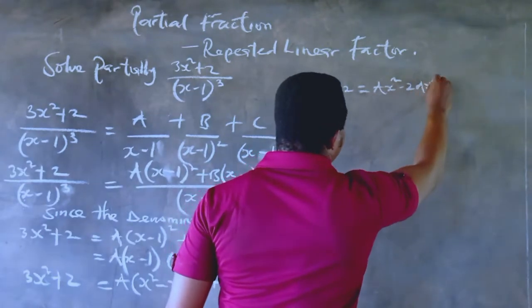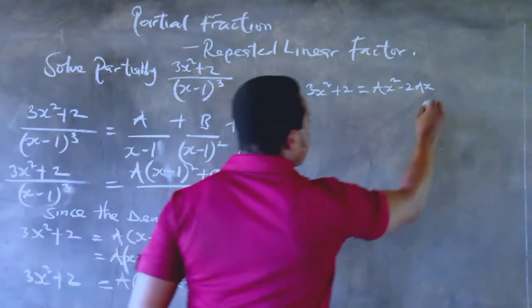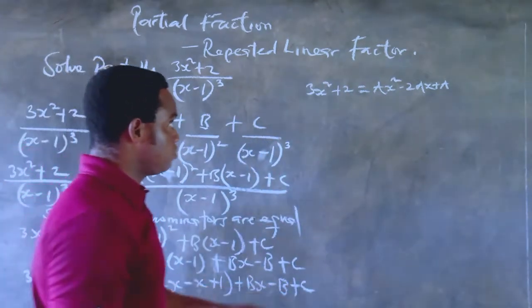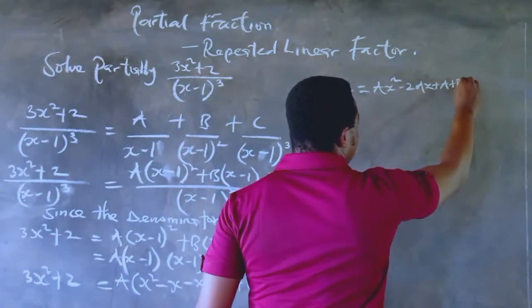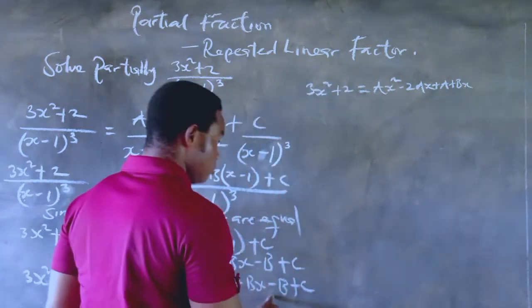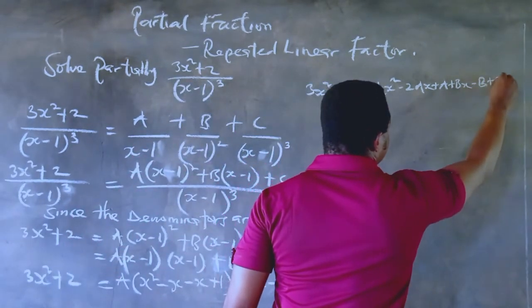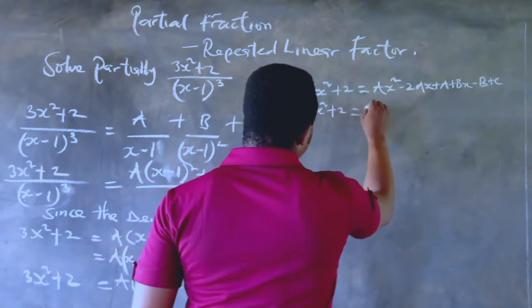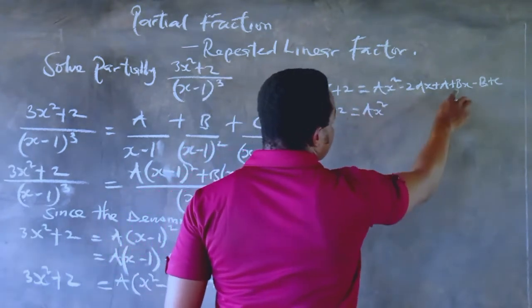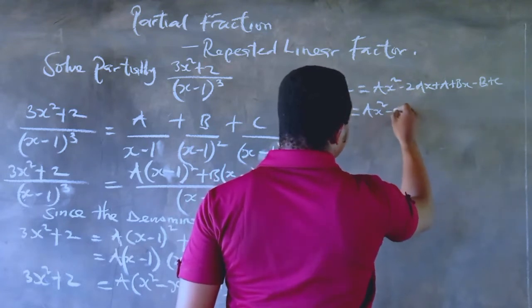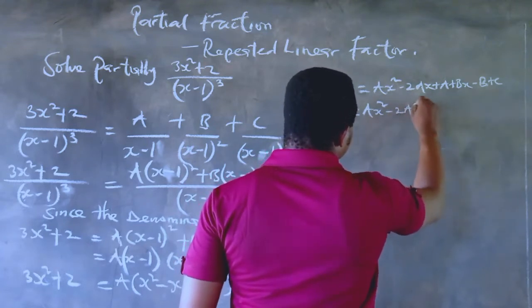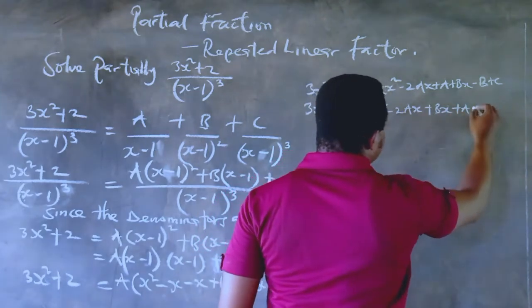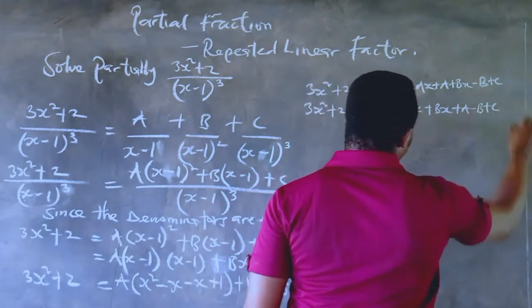So opening the bracket on the right-hand side, we have Ax squared minus 2Ax plus A plus Bx minus B and plus C. So we have 3x squared plus 2 equals Ax squared minus 2Ax plus Bx plus A minus B and plus C.